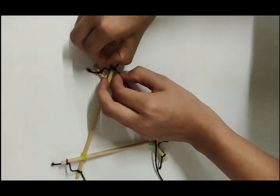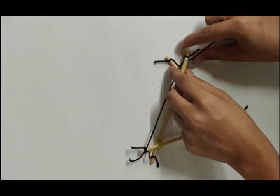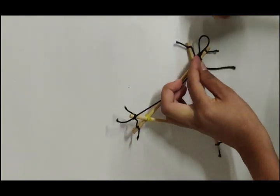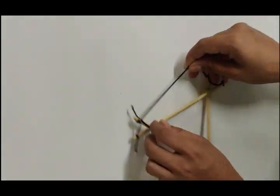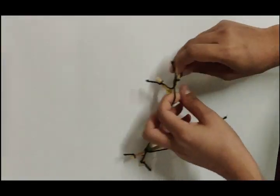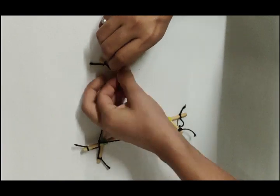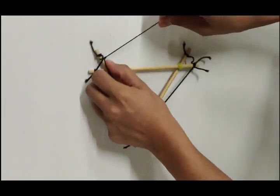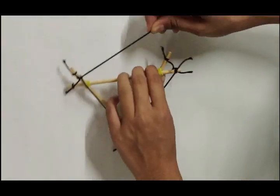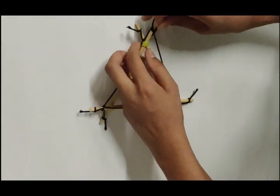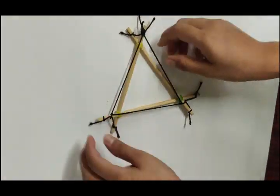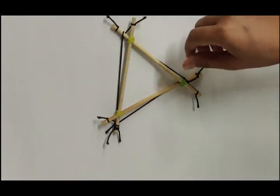Tie the longer string to the upper ends of the sticks, that is the top surface of the model. Continue in the same way for the other side of the structure.